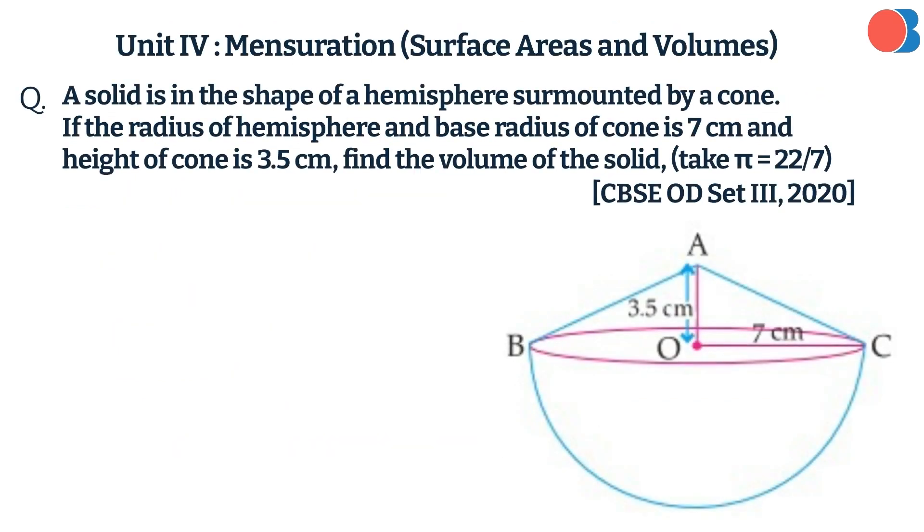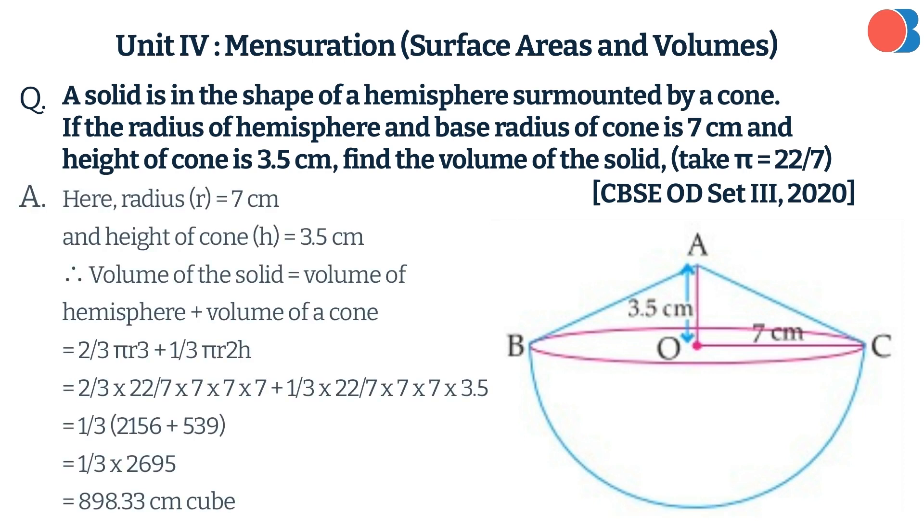A solid is in the shape of a hemisphere surmounted by a cone. If the radius of the hemisphere and base radius of the cone is 7 cm and the height of the cone is 3.5 cm, find the volume of the solid. Take π as 22/7. Here is the solution.